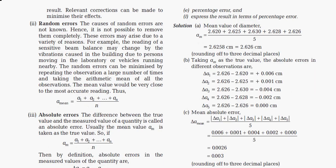First, we find the mean value. We add all the values and divide by the count. There are five readings, so we divide by 5. We get an average of 2.6258, which rounds to 2.626 — since after the decimal there are three significant figures, we round accordingly. So the mean diameter a_m = 2.626 cm.